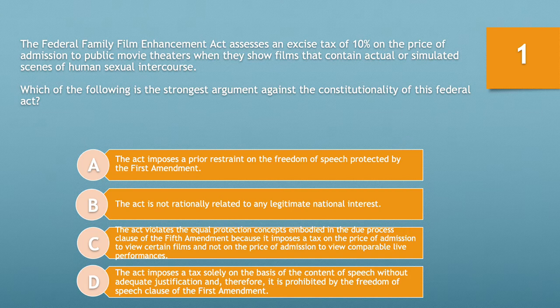A. The act imposes a prior restraint on the freedom of speech protected by the First Amendment. B. The act is not rationally related to any legitimate national interest. C. The act violates the equal protection concepts embodied in the Due Process Clause of the Fifth Amendment because it imposes a tax on the price of admission to view certain films and not on the price of admission to view comparable live performances.